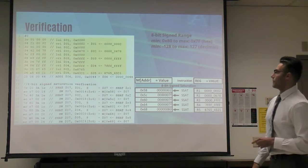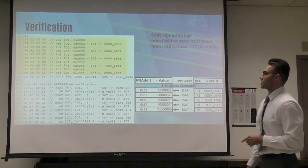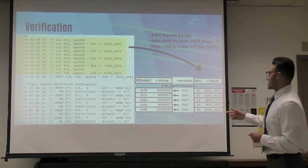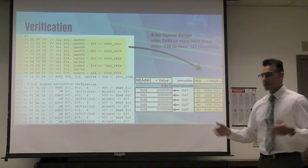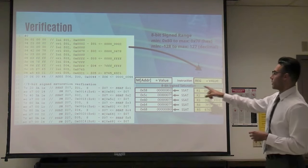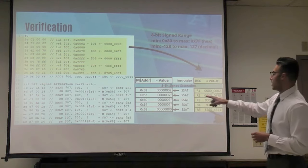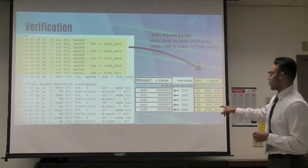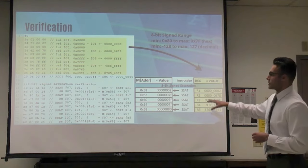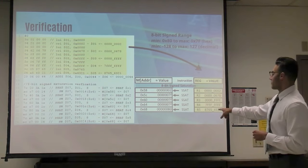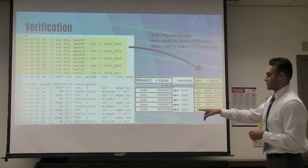This is our 8-bit saturation. Same concept except the boundaries change. R1 is passed through back to a register. R2, R3, and R4 are saturated to the maximum value and saved to memory. R5 is saturated to the minimum value and saved to memory.